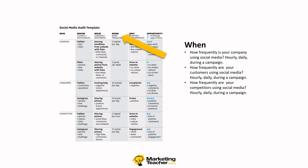Next we go to When. How frequently is your company using social media — hourly, daily, or just during a campaign? How frequently are your customers using social media? And how frequently are your competitors? A lot of communication may not be what you're after. For example, if you're communicating hourly or daily but your customers are only interested in receiving messages weekly, monthly, or biannually, you're giving them too much information and diluting your message. You need to work out when customers use social media and what the right frequency is — you might learn this by looking at your competitors.